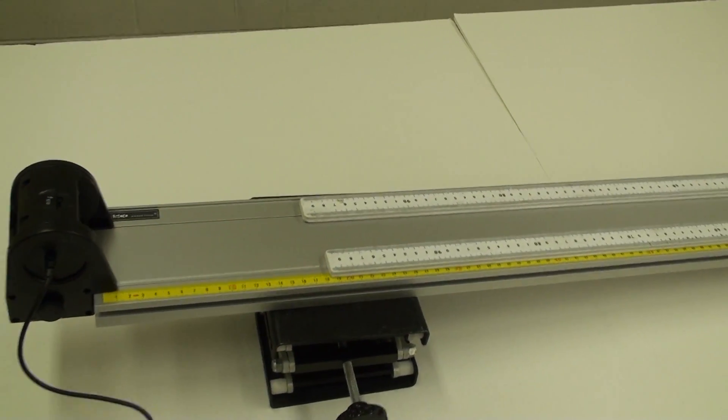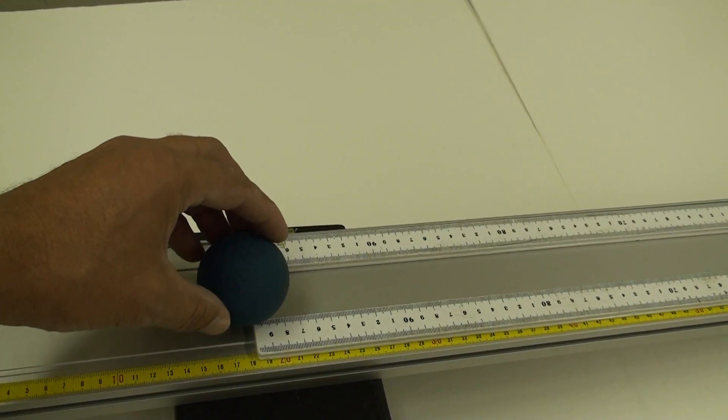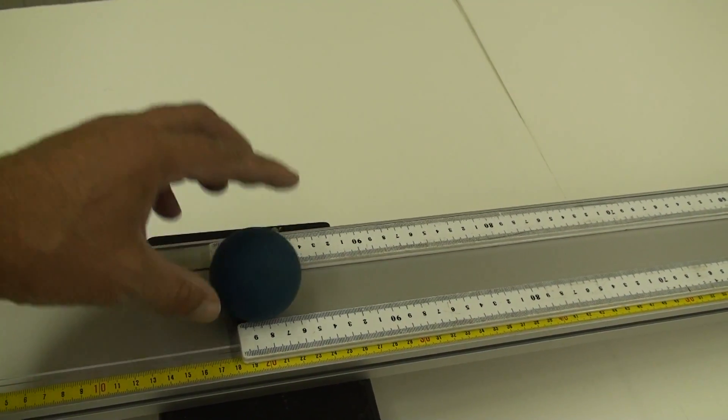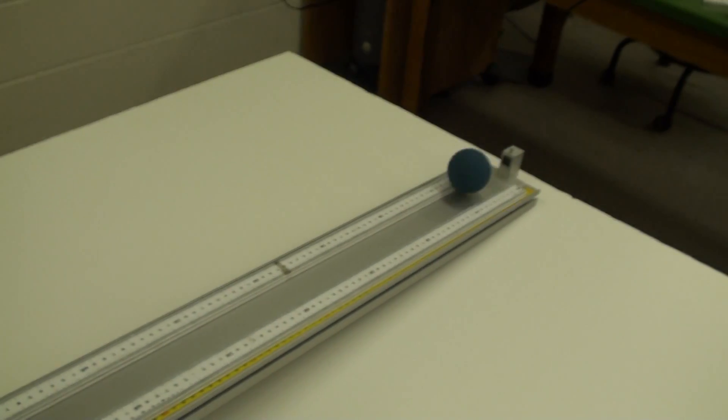Repeat the experiment with the racquetball, considered a hollow sphere. In the analysis, don't forget to change the value of f to two-thirds.